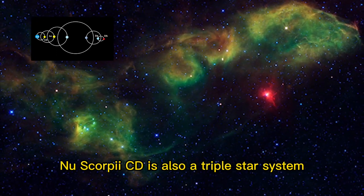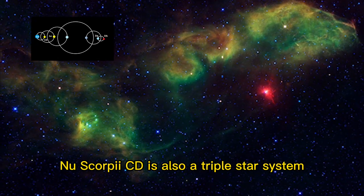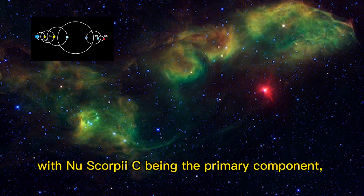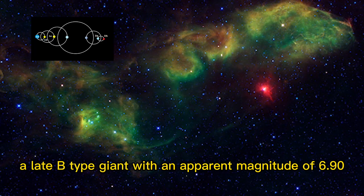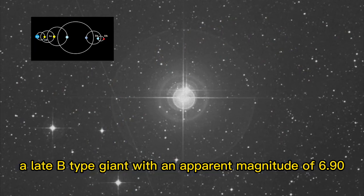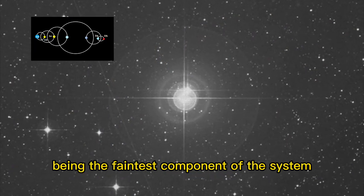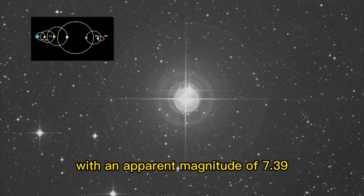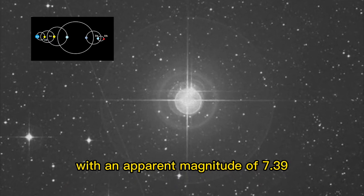Nu Scorpii C-D is also a triple star system with Nu Scorpii C being the primary component, a late B-type giant with an apparent magnitude of 6.90, and Nu Scorpii D being the faintest component of the system with an apparent magnitude of 7.39.